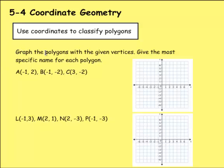So for example, it says graph the polygons with the given vertices. Give the most specific name for each polygon. So we're just going to plot out the points and then we're going to find out what shape that makes. For A is negative 1 for x and 2 for y, so I'm going to use red for this. Negative 1 for x, 2 for y. Negative 1 for x, negative 2 for y. So that would be at 3, negative 2.